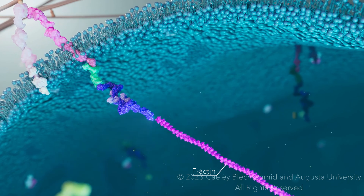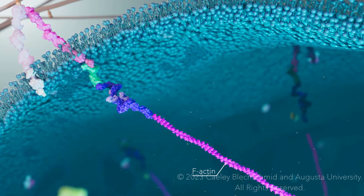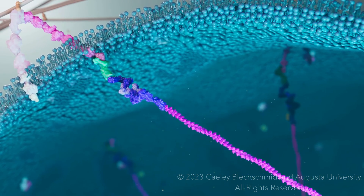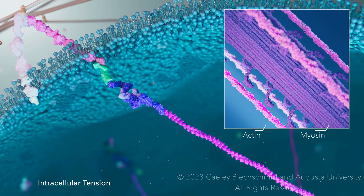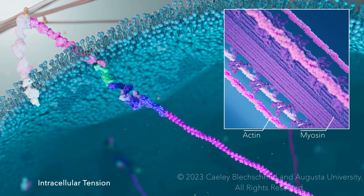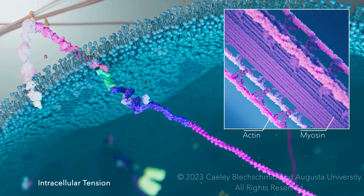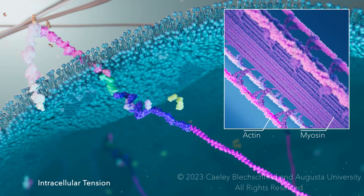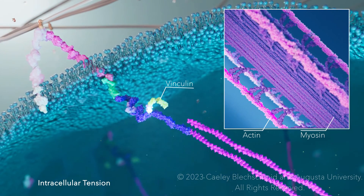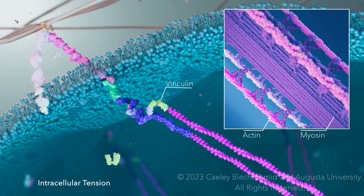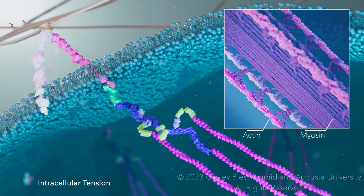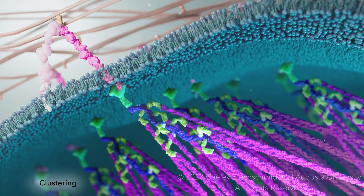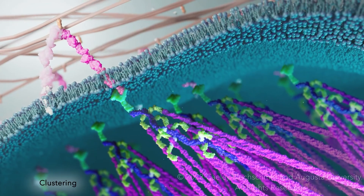A single F-actin filament is able to bind to the intracellular talin. Mechanical tension from myosin allows for more binding sites to be exposed on the talin protein. Vinculin can then adhere to the talin in the exposed sites, triggering a rapid concentration of F-actin.